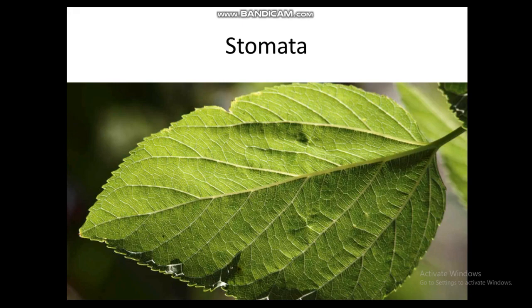Next is the very important concept of stomata. If we look at the under surface of a leaf under a microscope, we can see small holes or small pores. These are mostly present on the under surface, sometimes also on the upper surface. These small pores are known as stomata.